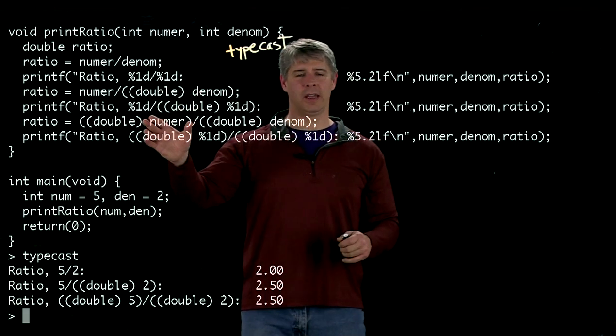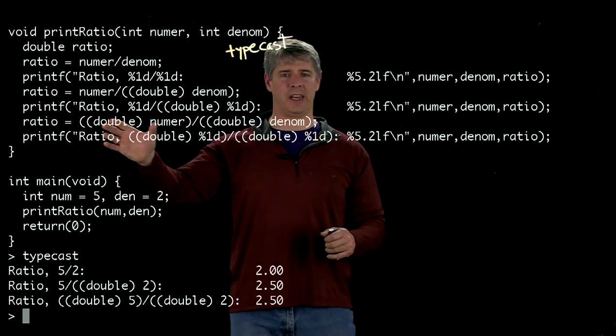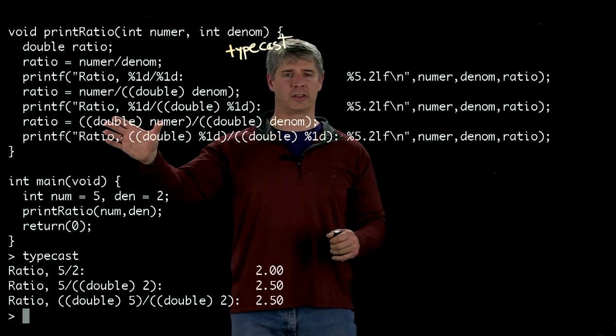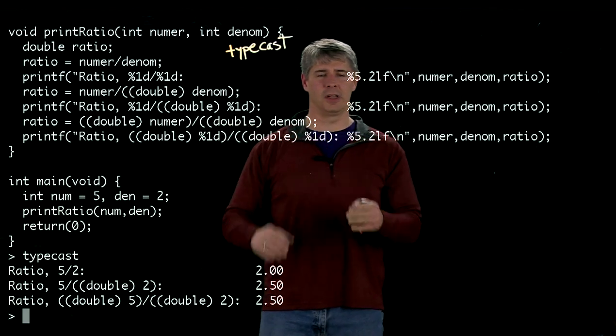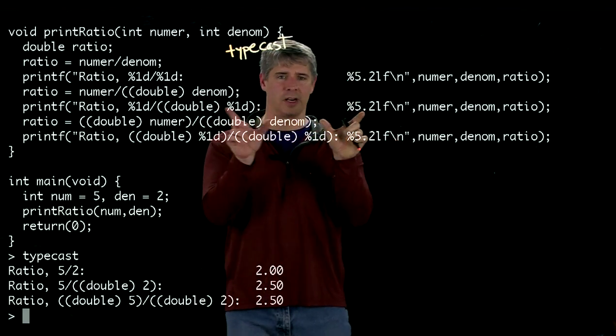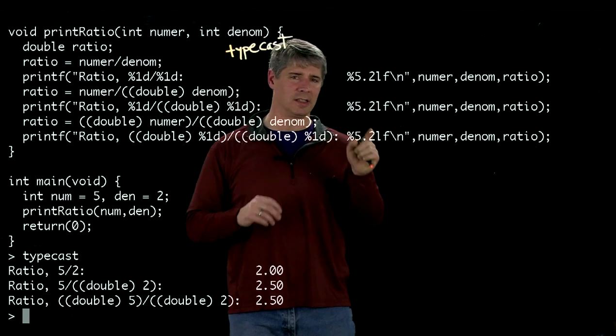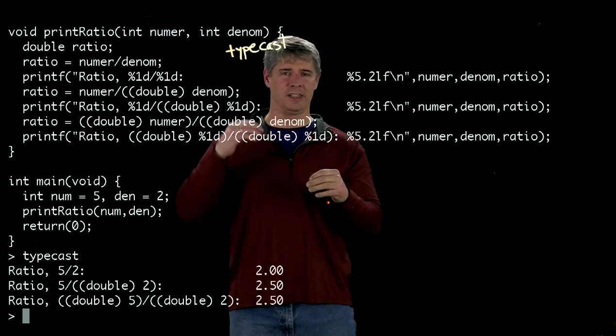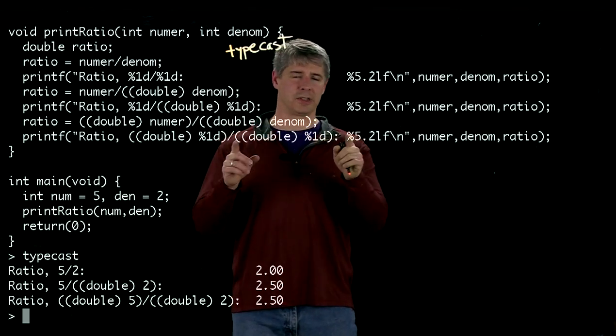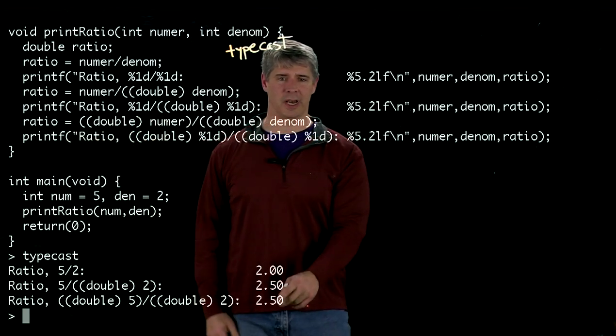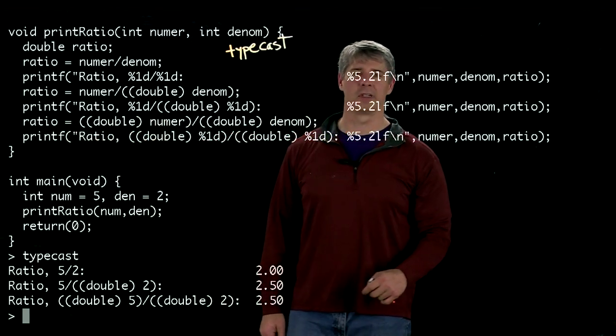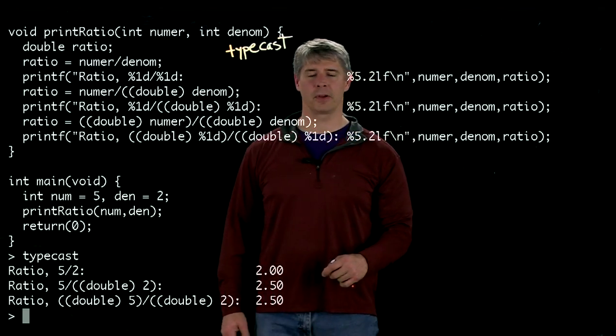In the last one, now we're going to explicitly change both sides. The numerator is going to be changed into a double, the denominator is going to be changed into a double. So the divide sign sees two doubles on each side. It does a double precision division, not an integer division. It takes the result, which is 2.5, and assigns it to ratio. And again, we print it out, so we see down here that the result is 2.5.